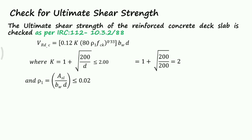Rho equals ASL divided by BW times D which should be less than 0.02. ASL provided is 754 divided by 1000 times 220. We get 0.00343 which is less than 0.02.